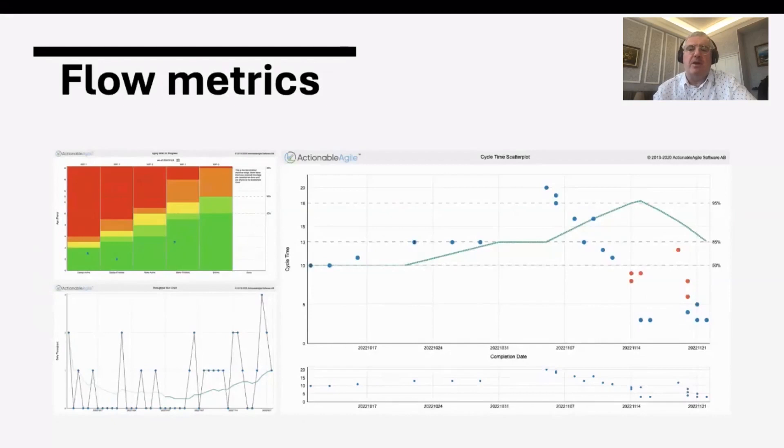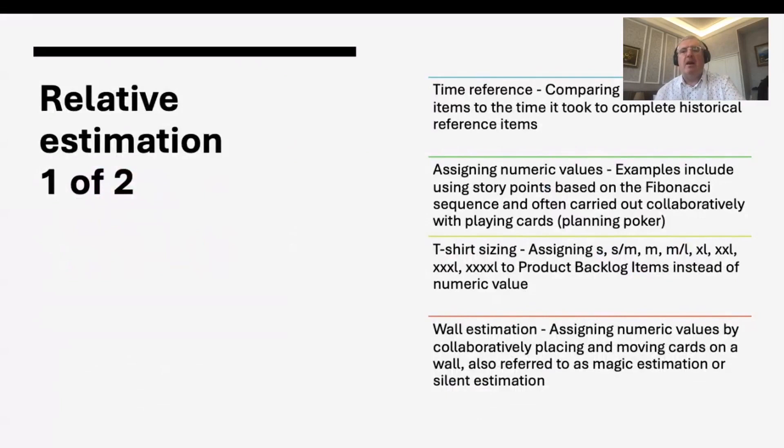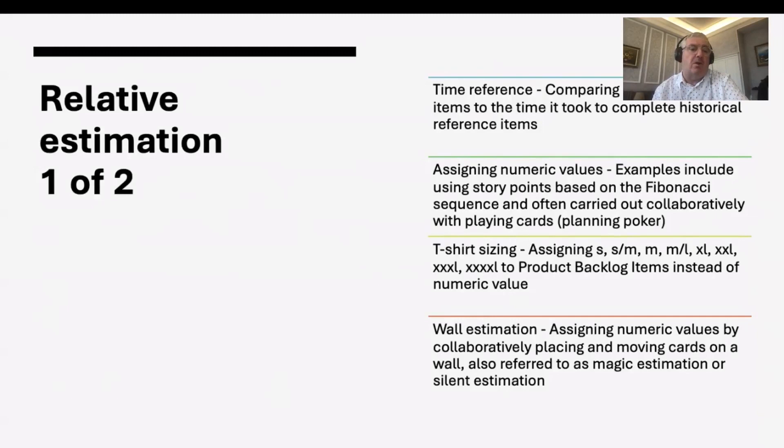On relative estimation: time reference means comparing current work items to items you've done before. Interestingly, when you recall a past item, you remember how long it took — including waiting time — not the story points or ideal hours you estimated. So the waiting time is included, which is really interesting. You can also use numeric values, the most common being story points on the Fibonacci scale.